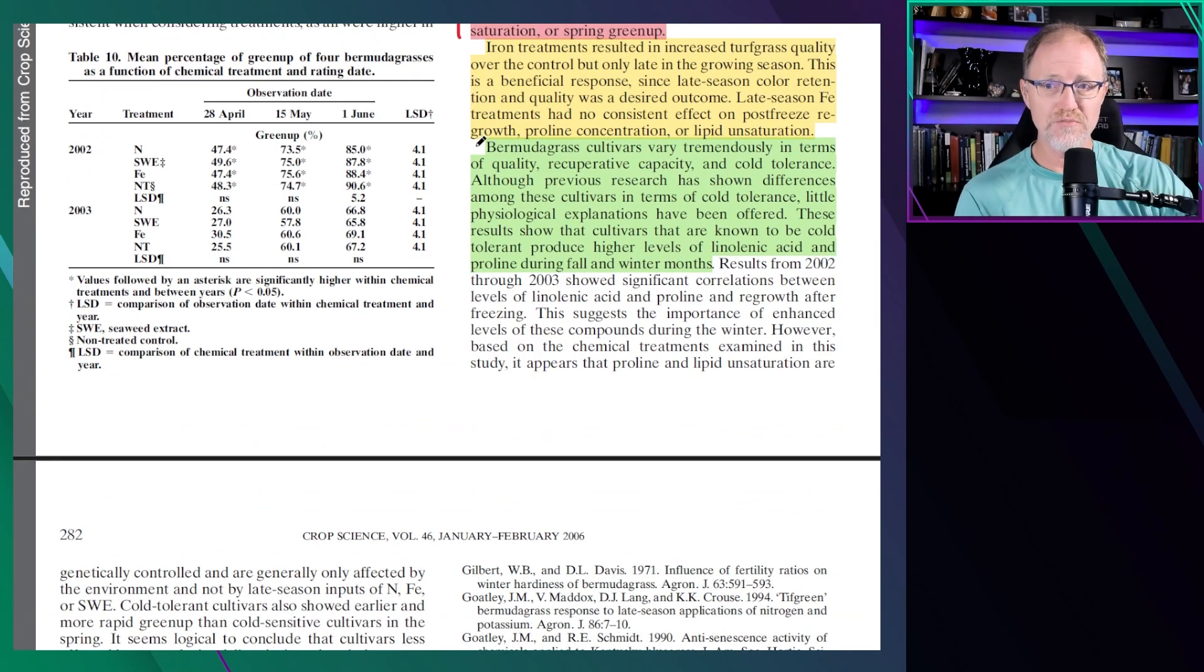Bermudagrass cultivars vary tremendously in terms of quality, recuperative capacity, and cold tolerance. These results show that cultivars that are known to be cold tolerant produce higher levels of linolenic acid and proline during fall and winter months.